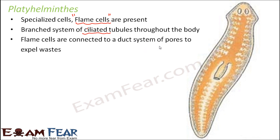The flame cells are connected to a duct system of pores to expel the waste. All the branched tubules are connected to a pore, and from the pore they are thrown to the exterior. Each branched tubule has a cap-like structure called a flame cell. Cilia are present in each of these tubules, and due to their movement, fluid moves through this network. Once the fluid moves through the entire network, it reaches the pores — openings to the exterior — and through those pores the wastes are thrown out.